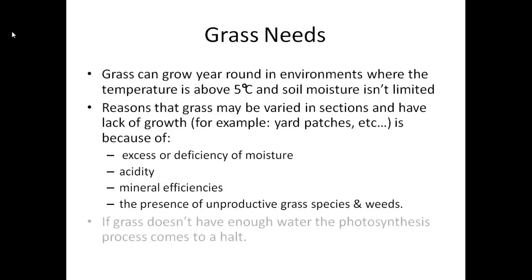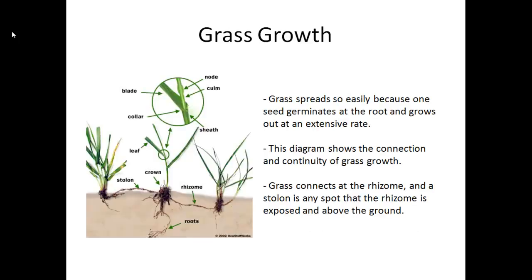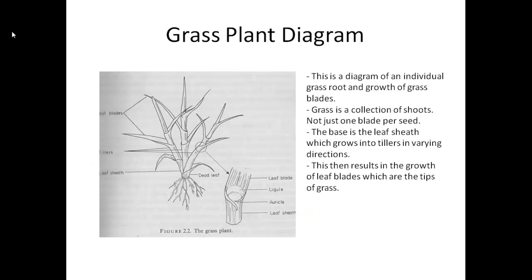If grass doesn't have enough water then photosynthesis comes to a halt. Grass is a very abundant crop and grows at an extensive rate. This diagram shows how grass grows and spreads out. Grass connects at the rhizomes and is stoloniferous at any spot that the rhizome is exposed and above the ground. This is a diagram of an individual grass root and growth of grass blades.